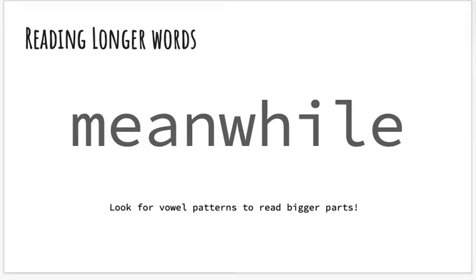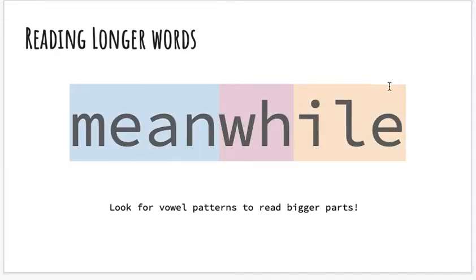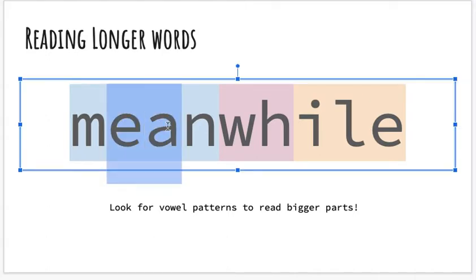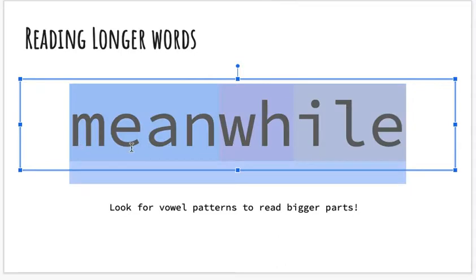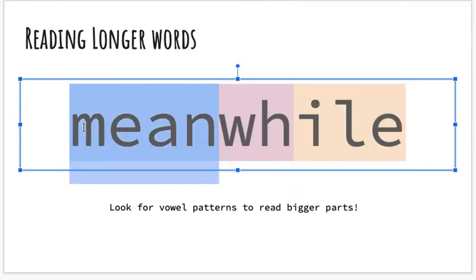So I'm going to show you what I did. In this big word, I see a smaller word. I see the vowel team E-A, and I know this vowel team says 'ee.' I know this word says 'mean.' Say the word — mean. Great.